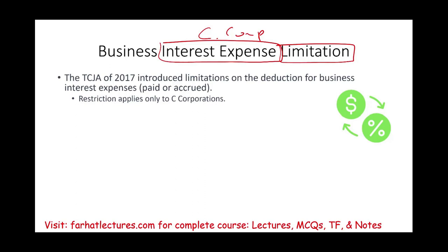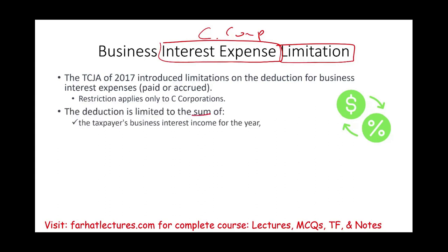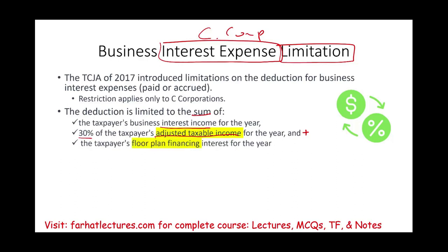This restriction applies to C corporations. So what is the deduction limited to? The deduction is limited to the sum of the following: the taxpayer's business interest income, plus 30 percent of the taxpayer's adjusted taxable income — which we'll look at in a moment — plus the taxpayer's floor plan financing interest for the year.